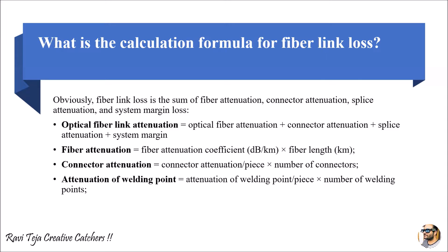The fiber link loss is the sum of: fiber attenuation loss, loss due to connectors, and loss due to fusion splicing. More specifically, the optical fiber link attenuation combines four components: fiber attenuation, connector attenuation, splice attenuation, and system margin. All four of these are considered when calculating the total optical fiber link attenuation loss.